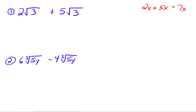The radical parts have to be exactly the same. So with the square root of 3 and the square root of 3, you add them just like like terms — you add the coefficients, so 2 plus 5 gives you 7 times the square root of 3. You do not get the square root of 6; you're not adding the radicand parts. The radicand parts have to be exactly the same, and then you keep that part and just add the coefficients.